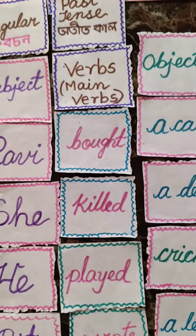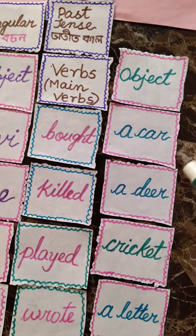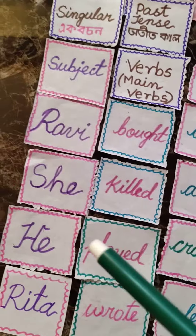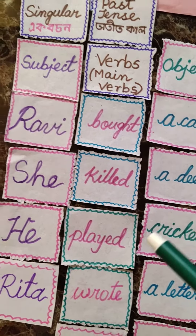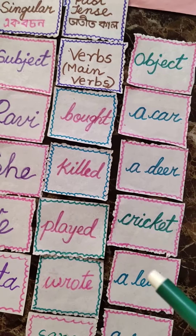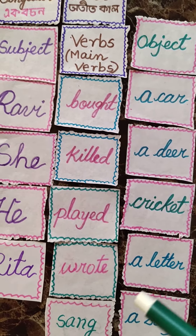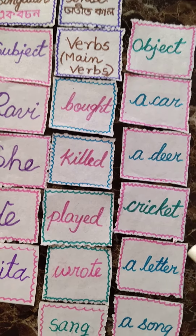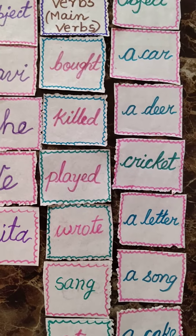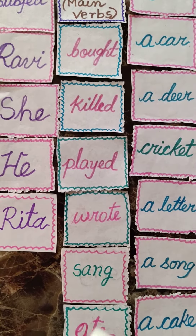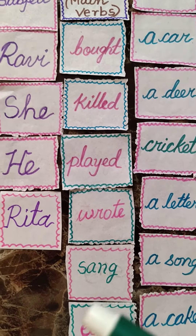Ravi bought a car. He killed a deer. He played cricket. Rita wrote a letter. Rita sang a song. Rita ate a cake.